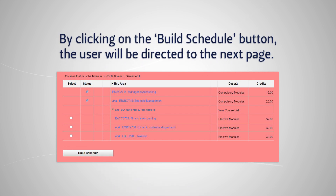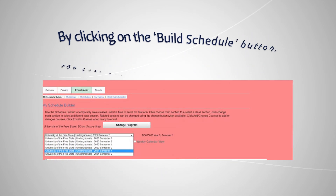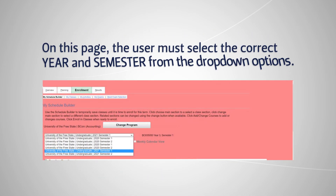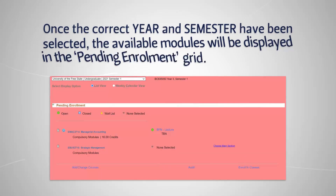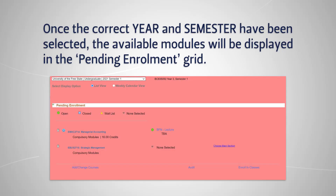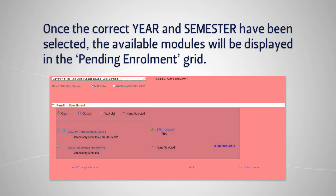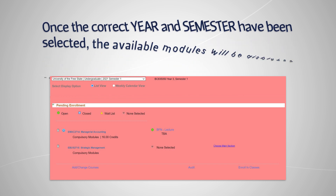By clicking on the Build Schedule button, the user will be directed to the next page. On this page, the user must select the correct year and semester from the drop-down options. Once the correct year and semester have been selected, the available modules will be displayed in the Pending Enrollment grid.